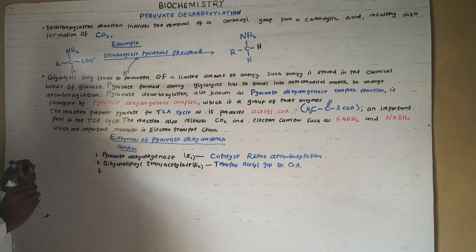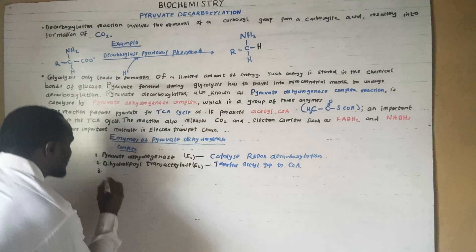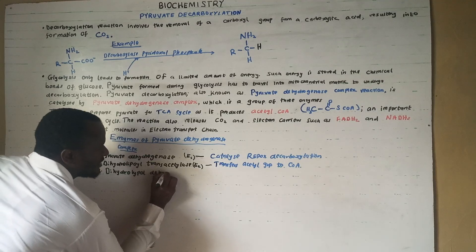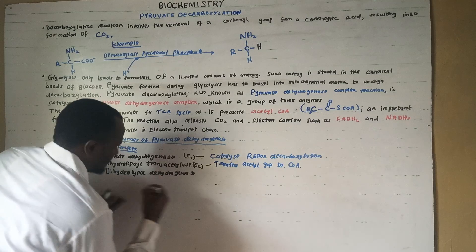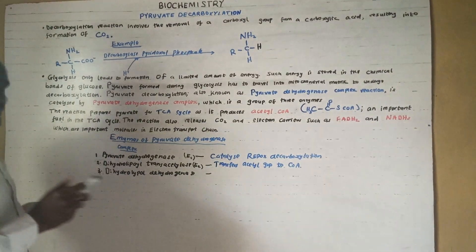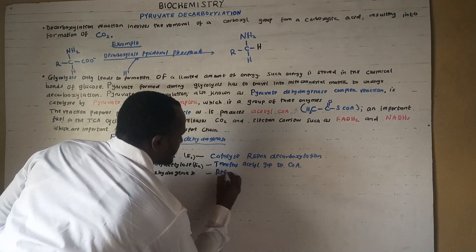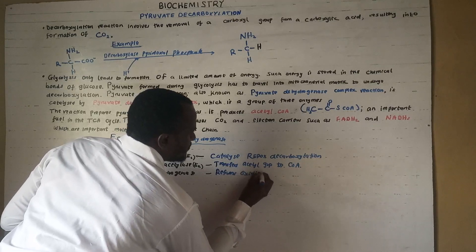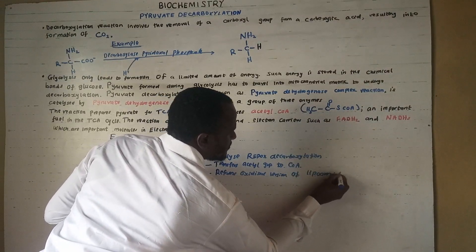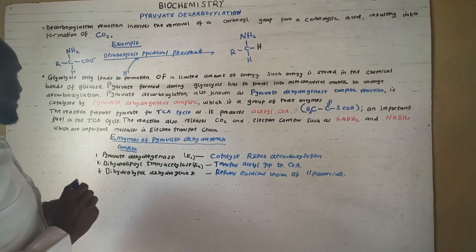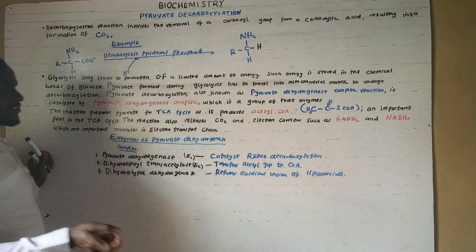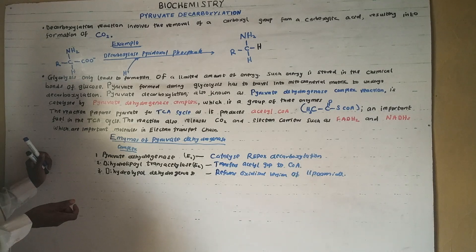The third and last enzyme is dihydrolipoyl dehydrogenase, designated E3. The role of dihydrolipoyl dehydrogenase is to reform the oxidized version of lipoamide.